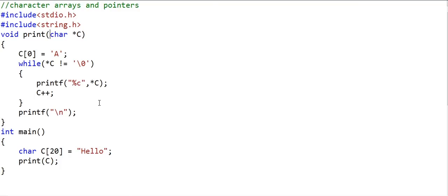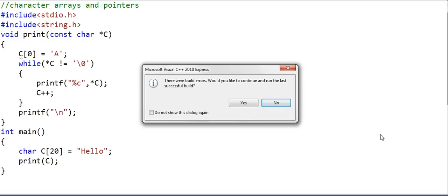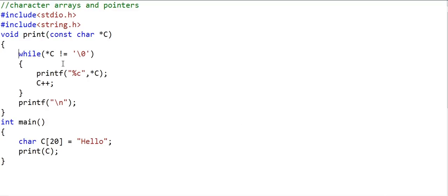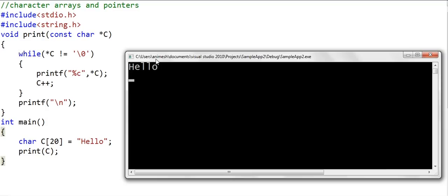Now sometimes we may want a function just to read a string and not write anything. To force this kind of behavior, we can change our argument to const character pointer. Now if we run this code, this code will give us compilation error. Now we can read whatever is there in the array that is passed, but we cannot write to any of the positions. This code will work fine.